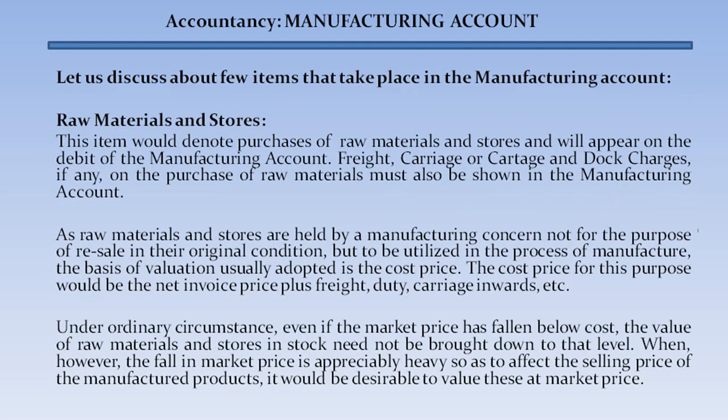Let us discuss a few items in the manufacturing account. Raw materials and stores: this item denotes purchases of raw materials and stores and appears on the debit of the manufacturing account. Freight, carriage, or cartage and import charges on purchases of raw materials must also be shown in the manufacturing account. As raw materials are held not for resale in their original condition but to be utilized in manufacture, the basis of valuation is cost price — that is, the net invoice price plus freight, duty, and carriage inwards. Even if market price falls below cost, raw materials need not be revalued unless the fall is appreciably heavy so as to affect the selling price of manufactured products, in which case market price should be used.